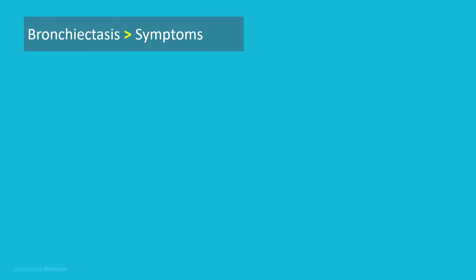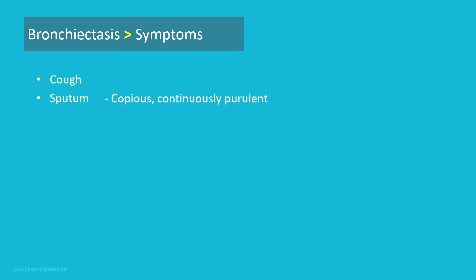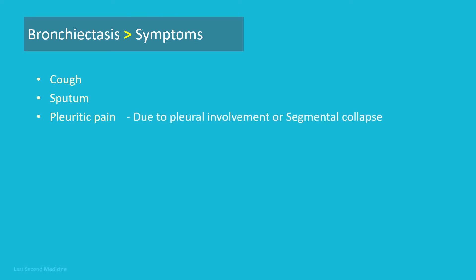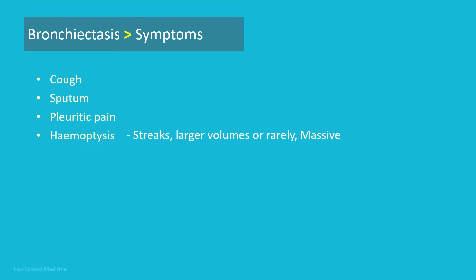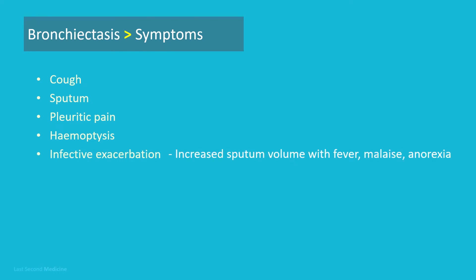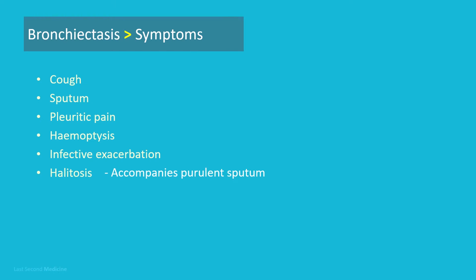The most common symptom is cough, which is chronic, daily, and persistent. The cough is productive of purulent sputum and is copious in amount. Pleuritic chest pain occurs when infection spreads to involve the pleura or with segmental collapse due to retained secretions. Streaks of blood are common, and larger volumes with exacerbation of infection may occur; rarely, massive haemoptysis requiring bronchial artery embolization occurs. Infective exacerbations occur with increased sputum volume, fever, malaise, and anorexia. Halitosis frequently accompanies purulent sputum.